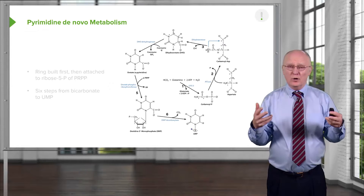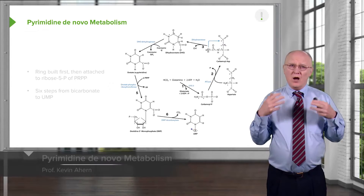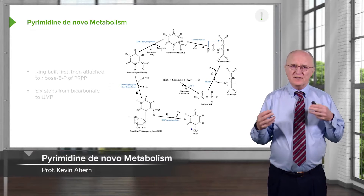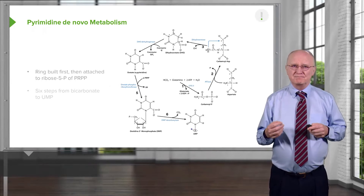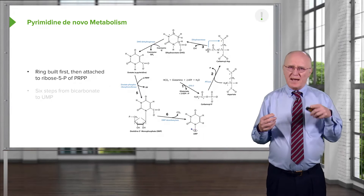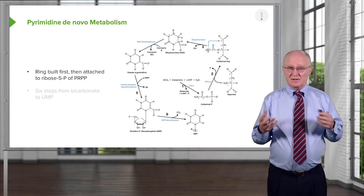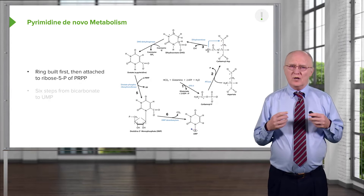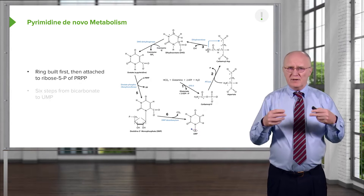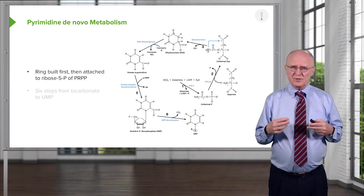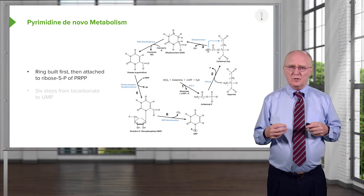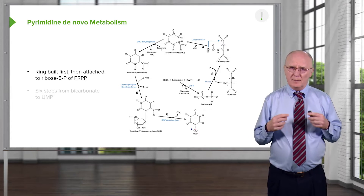That completes the synthesis in the de novo pathway of the purines. Now, let's look at the de novo synthesis of the pyrimidines. You can see on the screen the schematic showing the six reactions that one goes through in making pyrimidines, starting with very simple precursors and ending up with the first of the pyrimidine nucleotides, UMP.